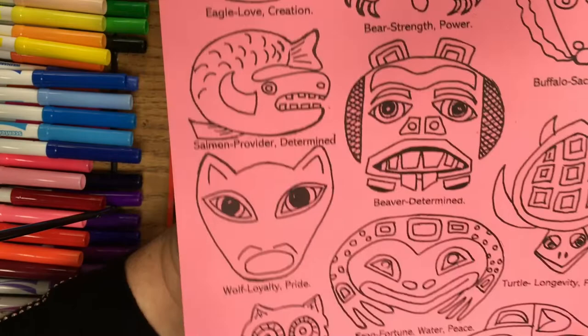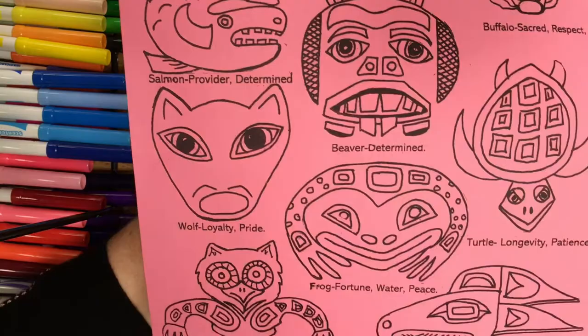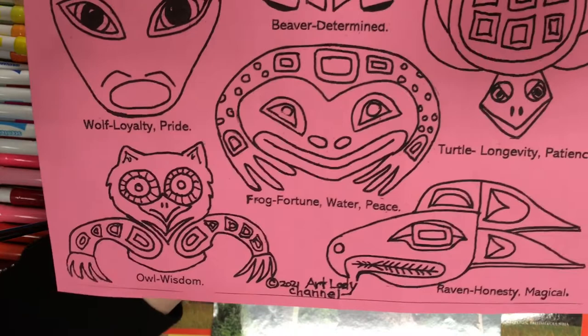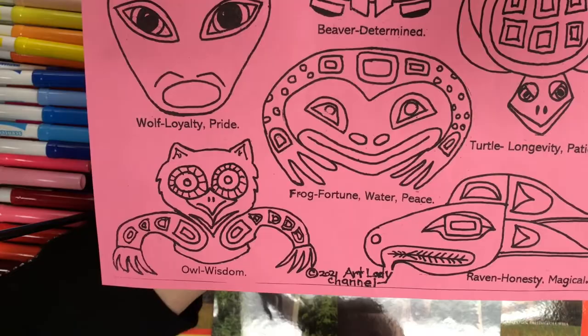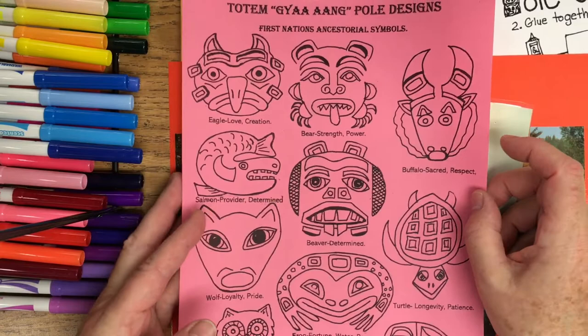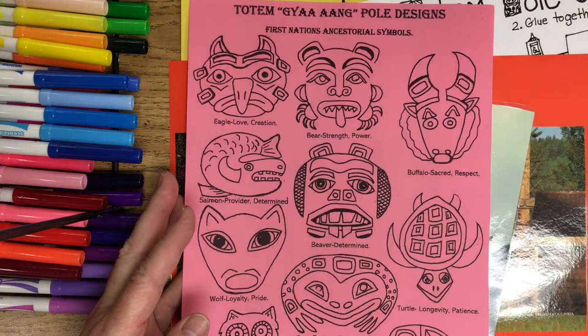Here's wolf. And they all have meanings, these symbols - loyalty and pride. Here's frogs. These are common images that would have been found on traditional Northwest Coast totems. Raven or owl. There's a lot of more modern day images as well, but these are more traditional symbols. And these are the First Nations ancestral symbols.